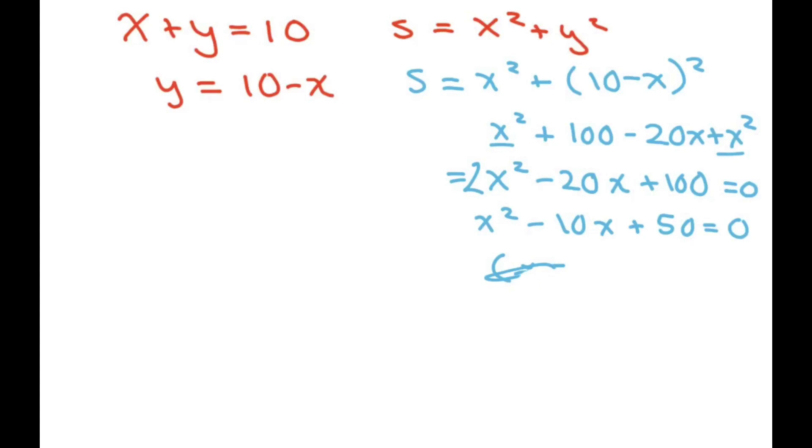I'm going to go ahead and take the derivative. The derivative of S with respect to x equals, and I'll go ahead and use this one because it's easier, you get 2x minus 10. You set that to 0, so you get x equals 10 over 2 or x equals 5.